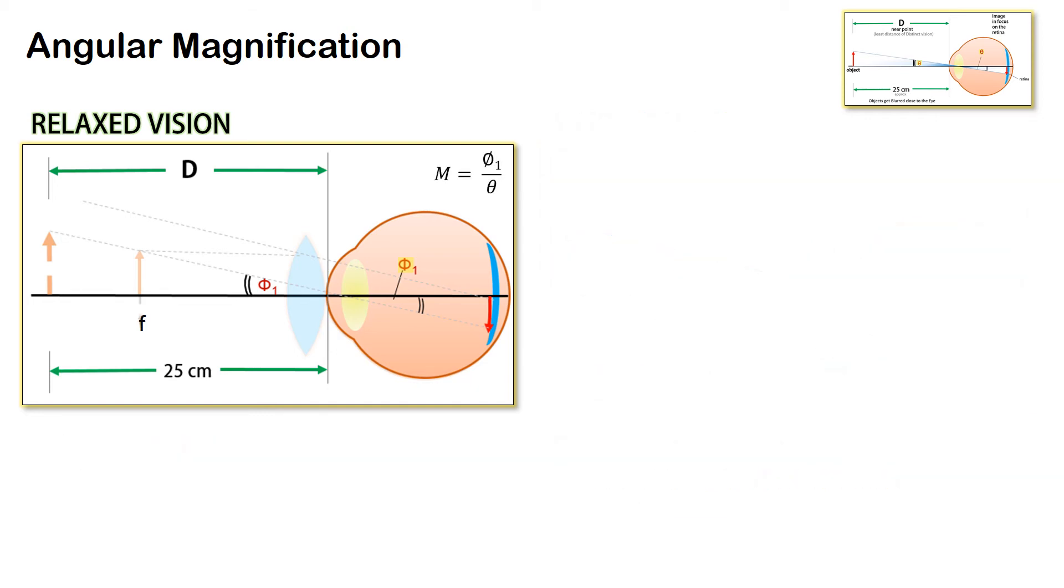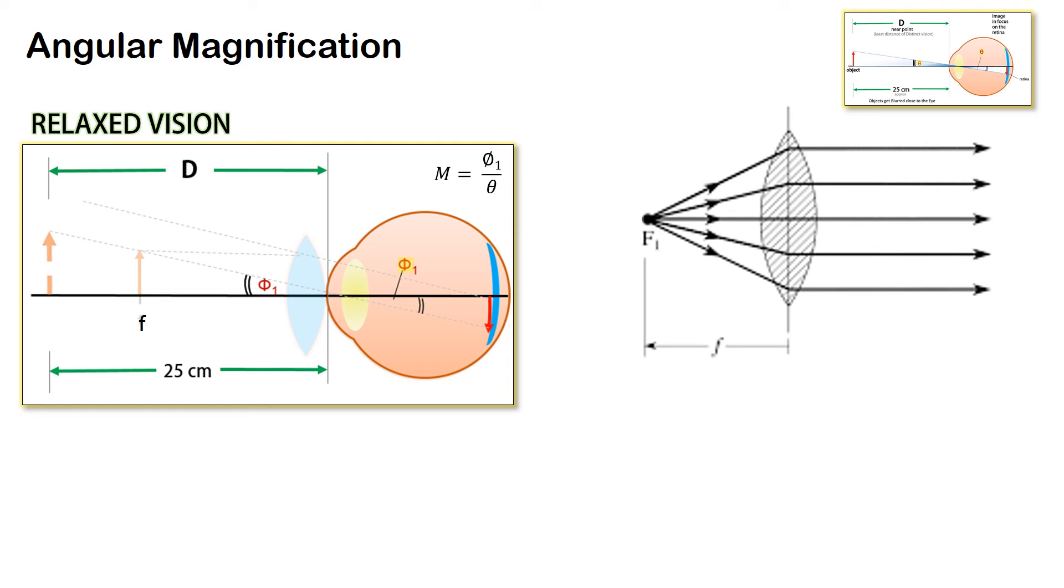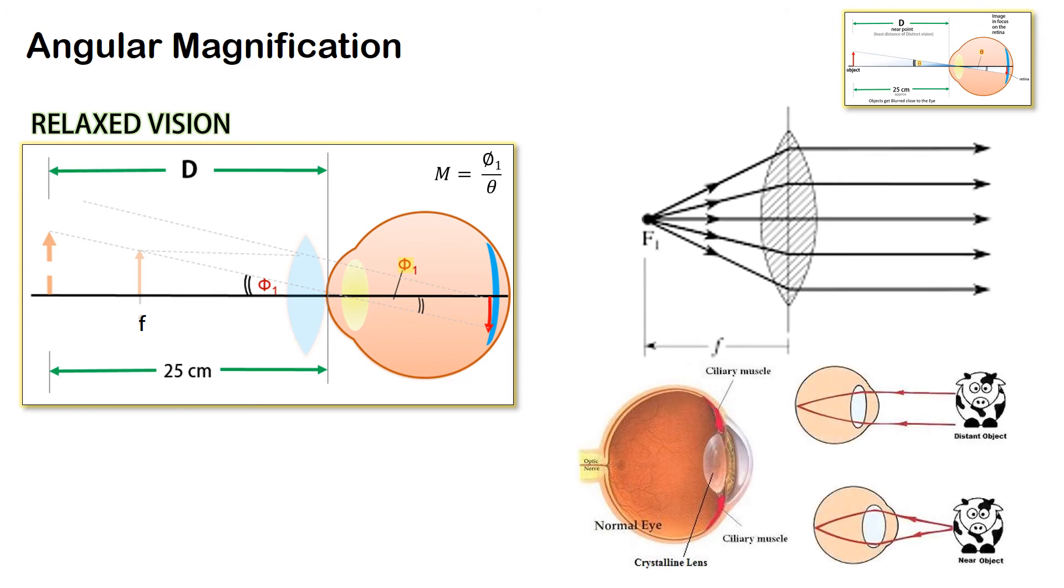When the object is placed at focus it appears to the eye that the rays are coming from infinity and this is relaxing to the eye. The ciliary muscles are less stressed in this case versus the case of distinct vision.